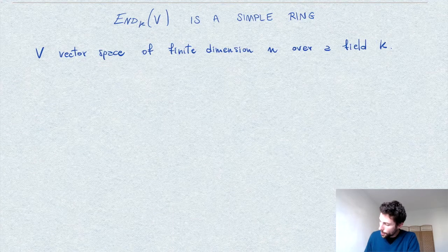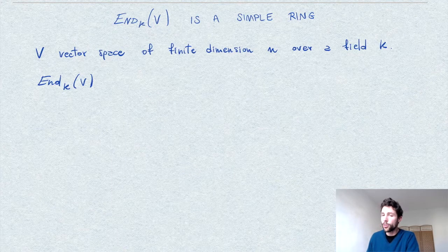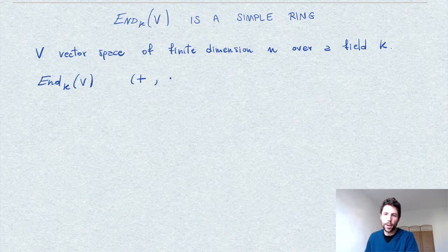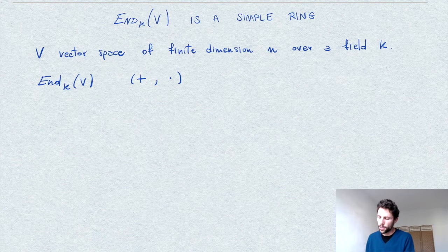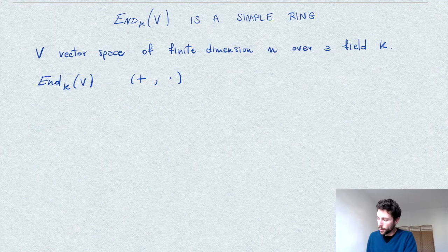The so-called endomorphism ring is a ring in the sense that endomorphisms are linear maps from V to itself, which can be added — so we have a plus operation — and a multiplication given by the composition of two maps. In fact, this ring is even more: it is an algebra over K because we can also have scalar multiplication, multiplying an endomorphism by a scalar element in the field K.